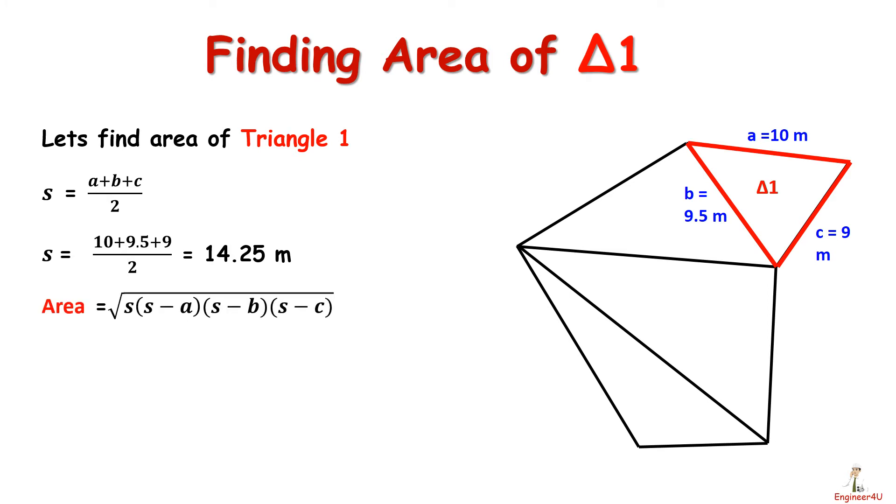Now by putting values of S, A, B, and C in Heron's formula, we get area of triangle 1.